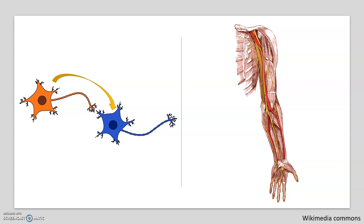You may have heard that the nervous system sends messages using electricity. So what exactly does this mean? It turns out that along the axon of a neuron, information is transmitted using positively charged ions that move across the cell membrane. In order to understand how these ions are able to move across the membrane, we first must learn about a concept called the membrane potential.